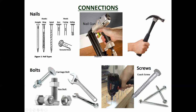Screws are used for connecting thin sheet material to walls, though that's not typically a civil engineering application. Coach screws, however, are structural fasteners. You drill a hole slightly smaller than the screw diameter and screw it in, acting similarly to a bolt. A spanner or wrench is used to tighten them.